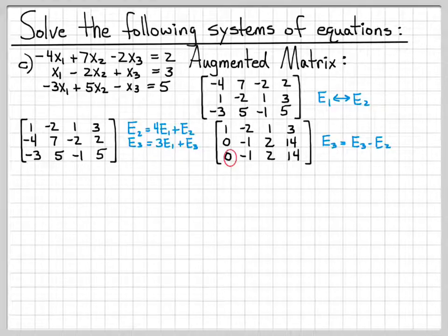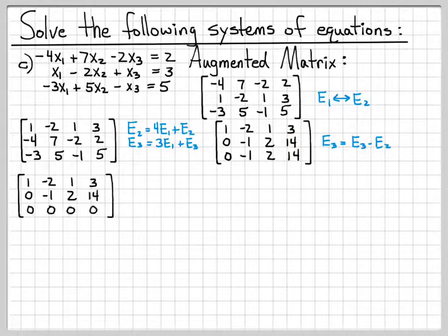So I'm going to have 0 minus 0, and I'm going to have a negative 1 minus a negative 1, and 2 minus 2, and 14 minus 14. That's going to turn this bottom equation into 0s.